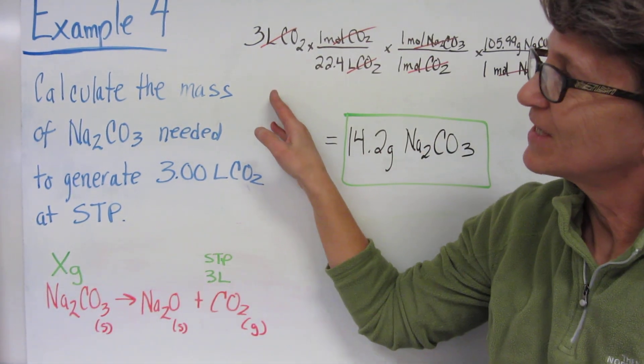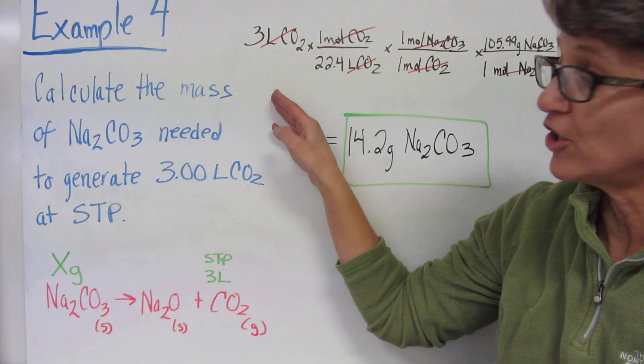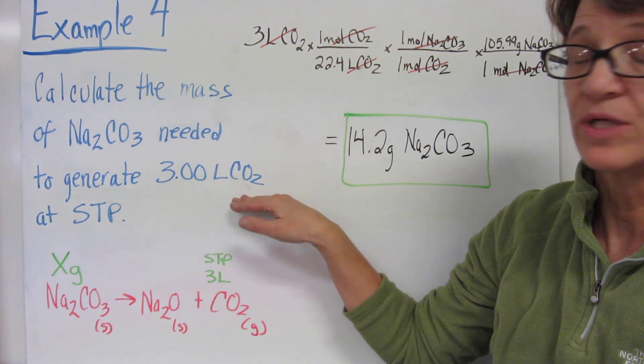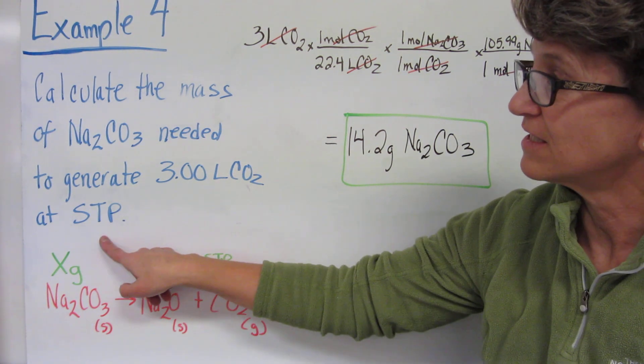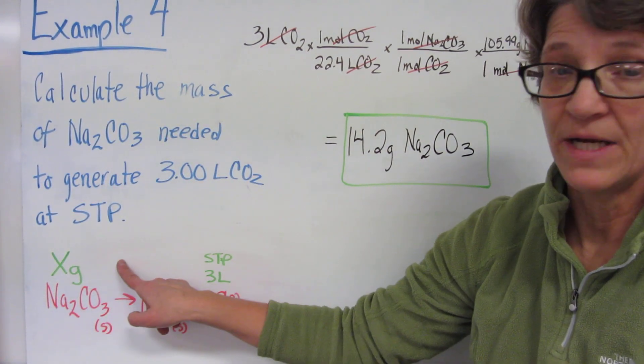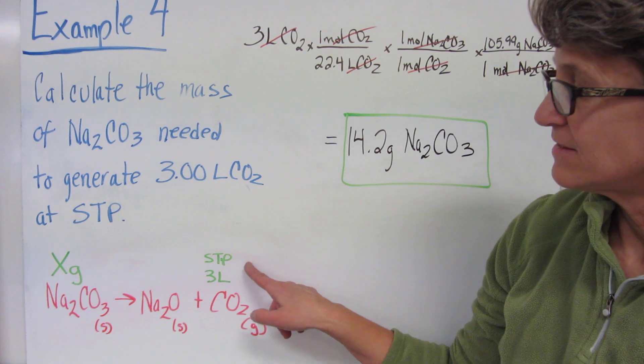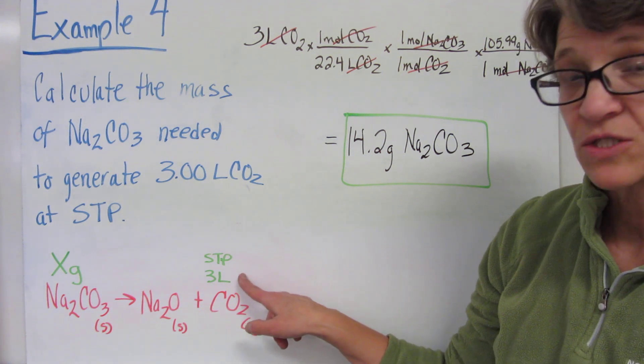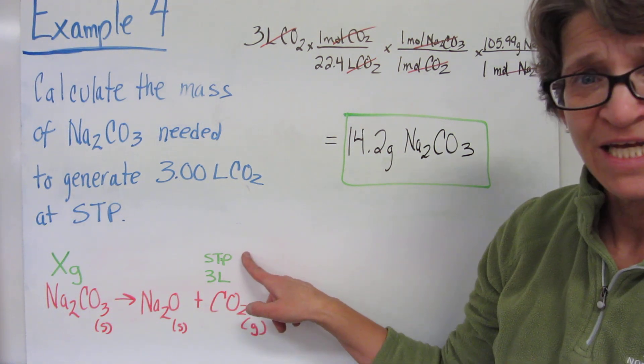In this one, let's calculate the mass of sodium carbonate needed to generate 3 liters of carbon dioxide at STP. So in this problem, I'm trying to find the mass of sodium carbonate, and my gas that I'm starting with is 3 liters at STP.